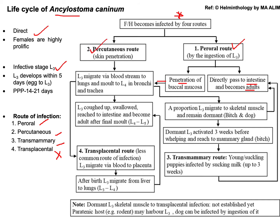In the percutaneous route of infection, L3 penetrates through the skin. This route also contributes to the transmammary route of infection. After penetration, L3 moves to the lungs via the bloodstream, where molting from L3 to L4 occurs in the lung. When these stages are coughed up and swallowed, they reach the intestine and become adult parasites after the final molt from L4 to L5.